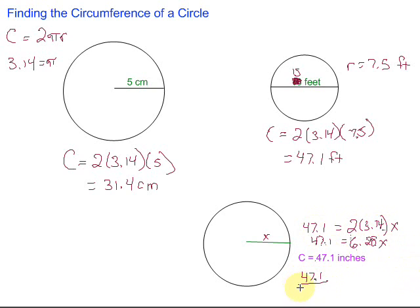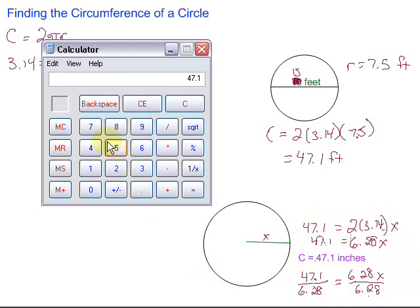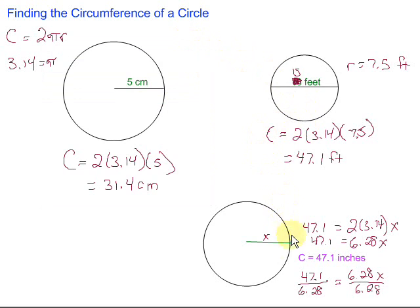47.1 divided by 6.28 and I'm just going to rewrite this over here. Dividing by 6.28 on both sides. When we do that, divide by 6.28, we get 7.5. So that means x must be 7.5. And don't forget your label. We had inches. So this is 7.5 inches.